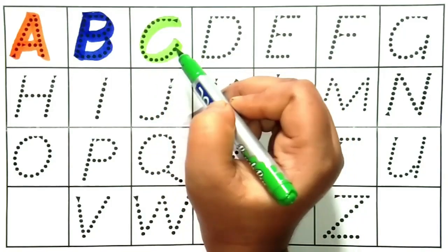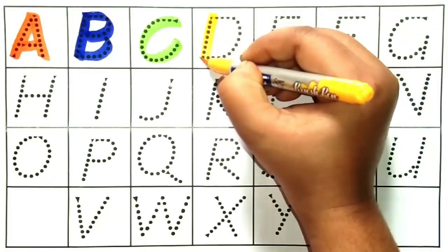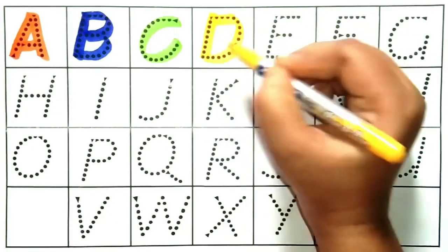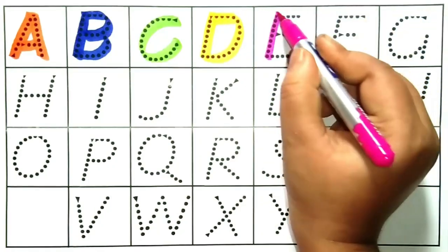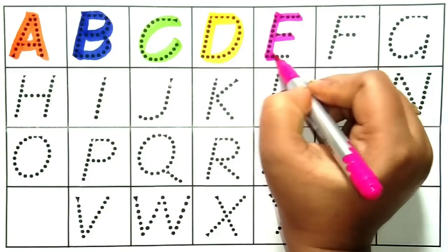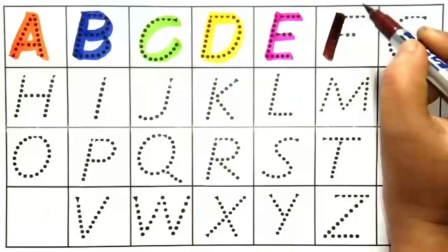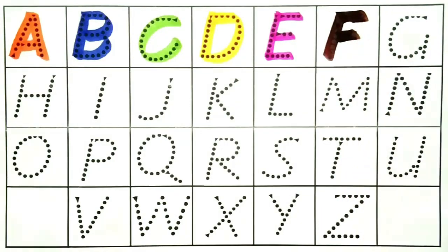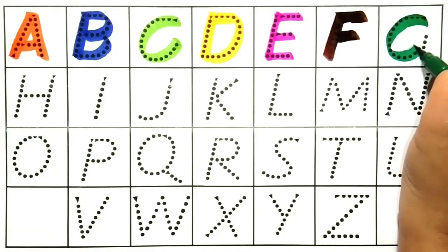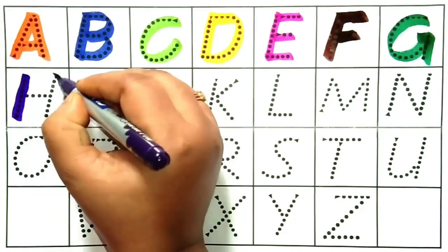C — C for cucumber. D — D for deer. E — E for egg. F — F for flower. G — G for grapes.